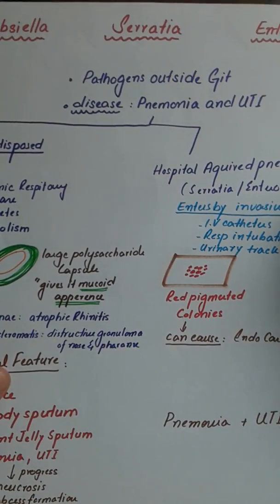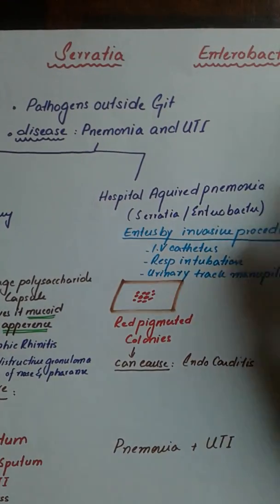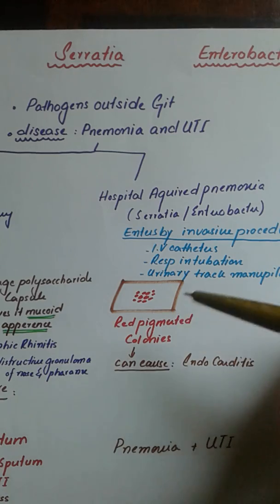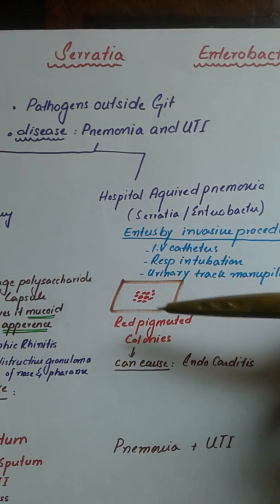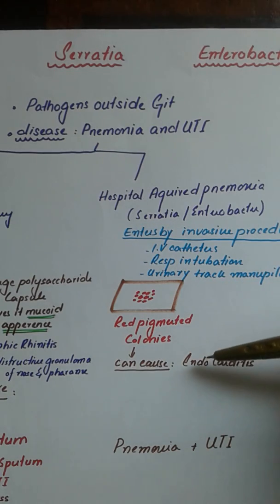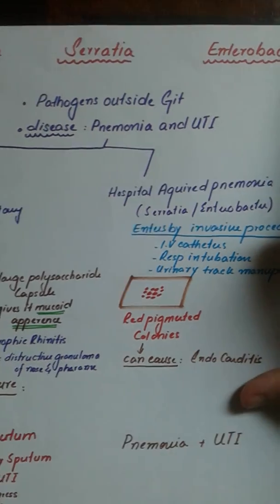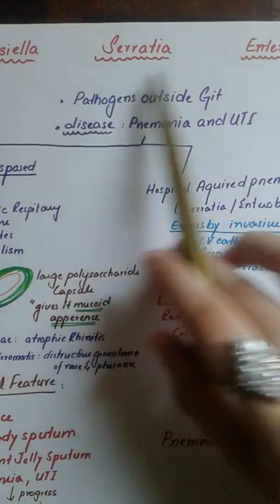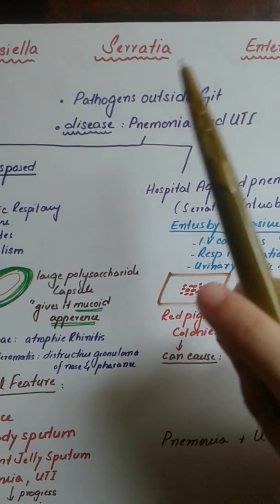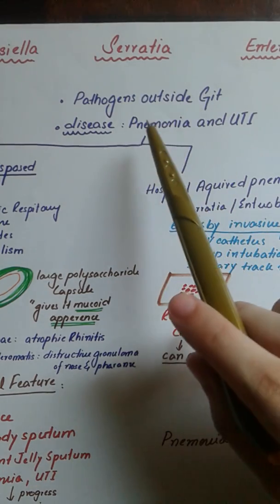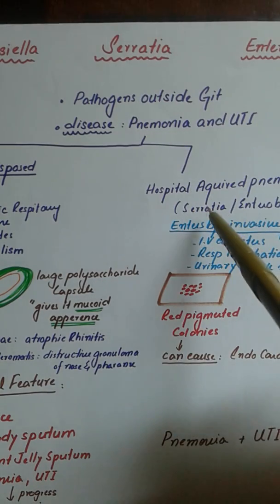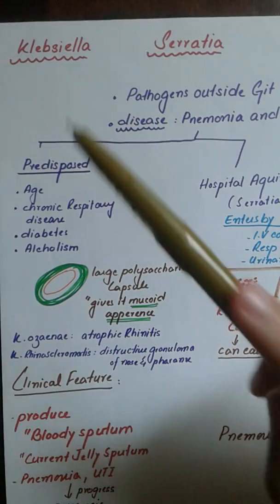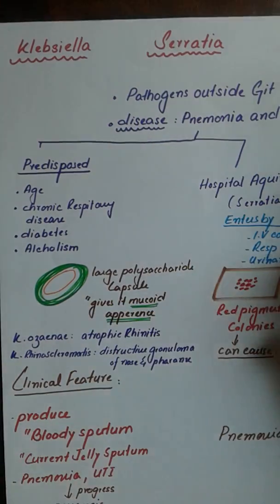The differentiating feature of Serratia is that it forms red pigmented colonies when grown on culture, and this can seriously lead to conditions such as endocarditis. Enterobacter does not have particular findings to note. All three are gram-negative rods that live outside the GIT and cause pneumonia or UTI — Serratia and Enterobacter in hospitalized patients, while Klebsiella in the elderly with chronic infection, diabetics, and alcoholics.